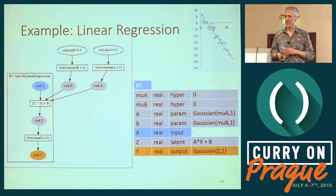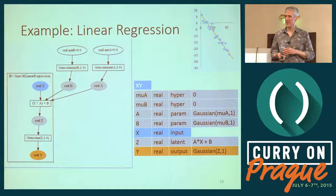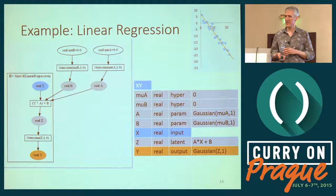You can visualize this as a factor graph — what we send to Infer.NET. Circles are random variables, square boxes are factors that compute one random variable from others. At the top, B and A are computed by Gaussian draws. Inside a 'plate' (a for-loop mapping over all table rows), we take X as input, compute Z, add noise, and get the output Y. This plate is equivalent to a map over all items in the table.